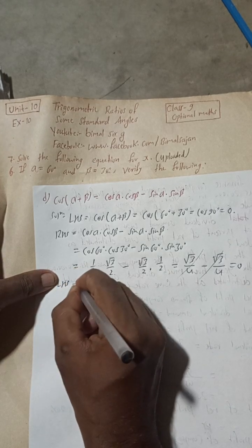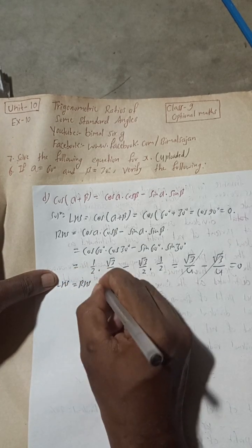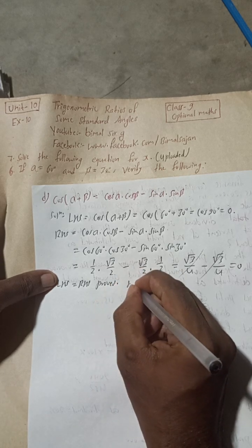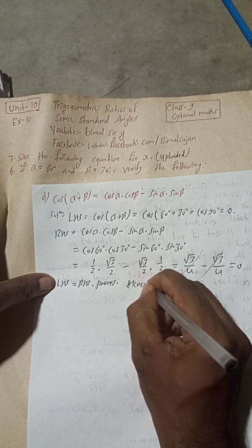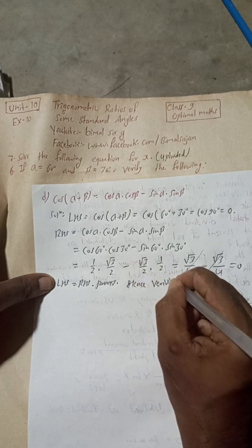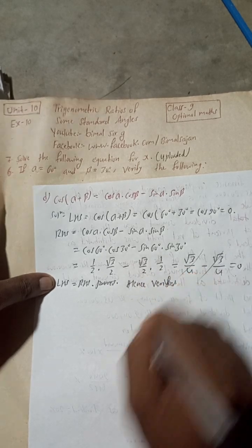0 equals 0, so LHS is equal to RHS. Proved. Hence verified.